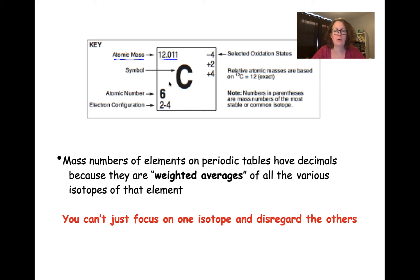So we can't just focus on one isotope and disregard the others because this is a mixture that's found in nature. We can't really separate them out, but we have to figure out what the average atomic mass might be of any particular atom that we pull out of a pile of carbon atoms.